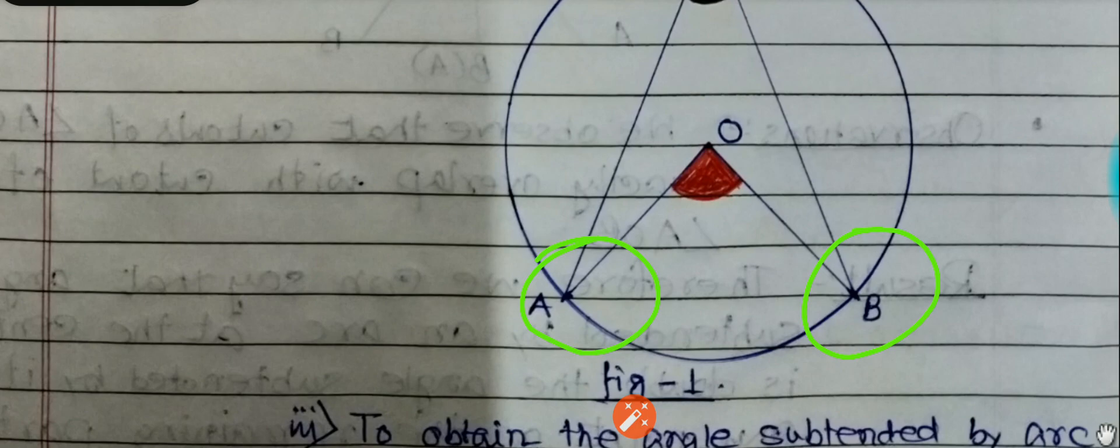Now with this A and B, join the center O to form an angle AOB which subtends at the center of the circle.